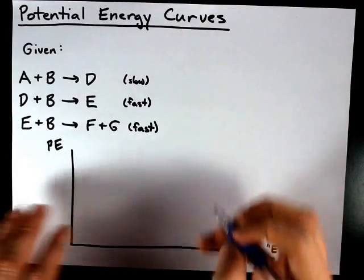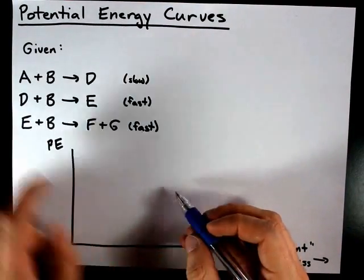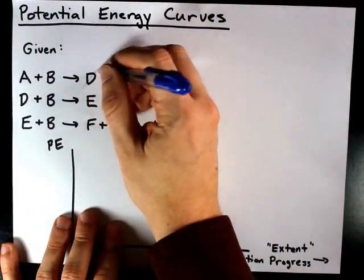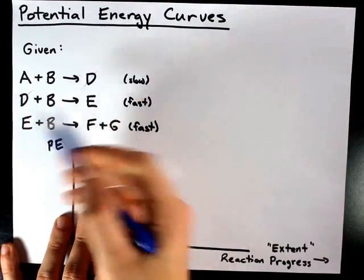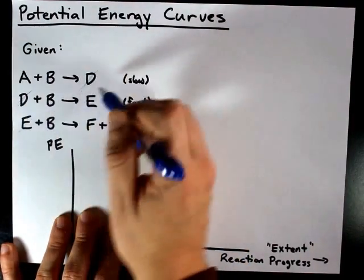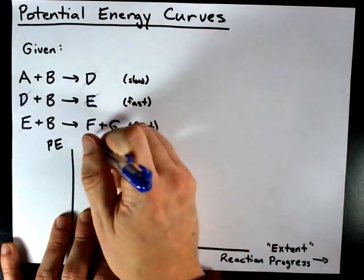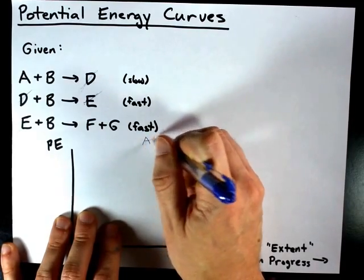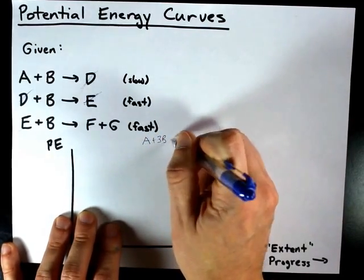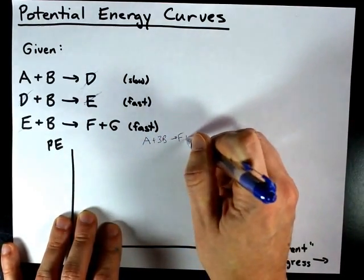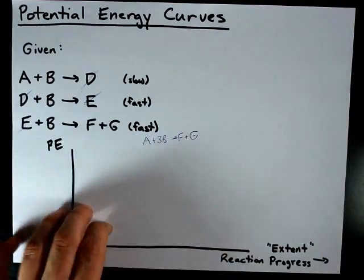Well, first of all, I kind of want to know what the overall reaction is here. D cancels with D, similar to Hess's law, E cancels with E, and my overall reaction is A plus three B's reacting to eventually give me an F plus a G. Cool.